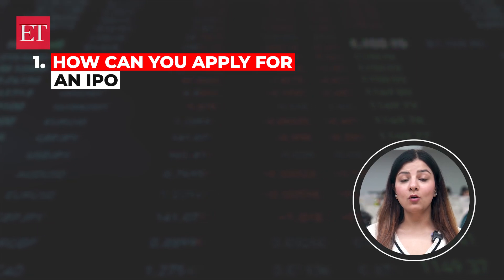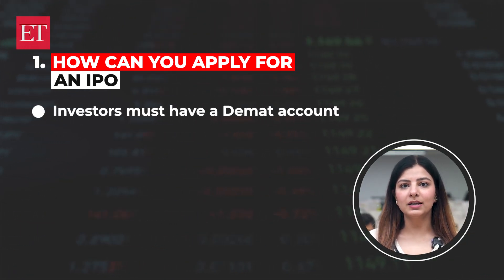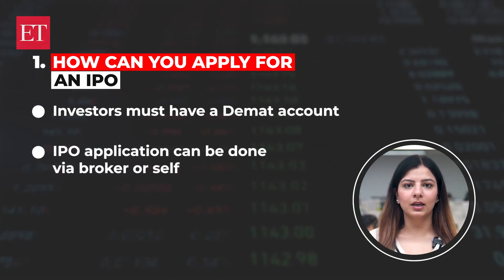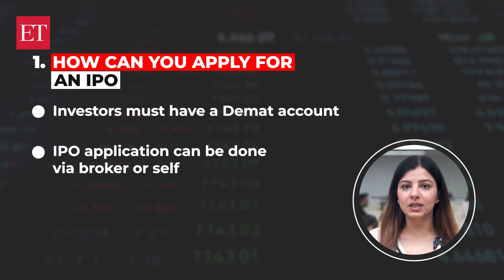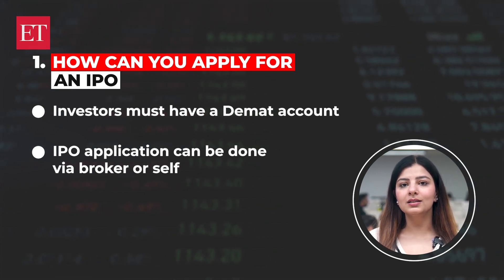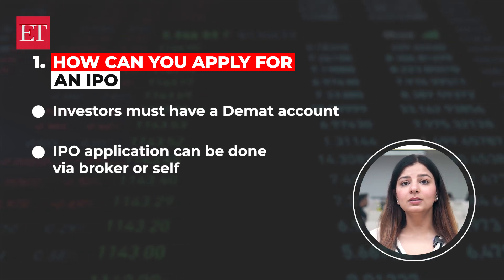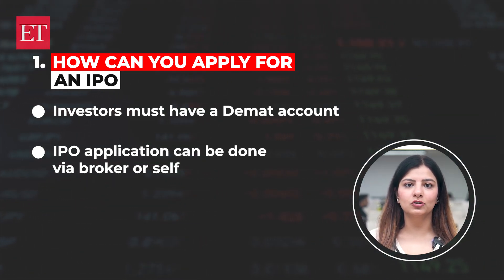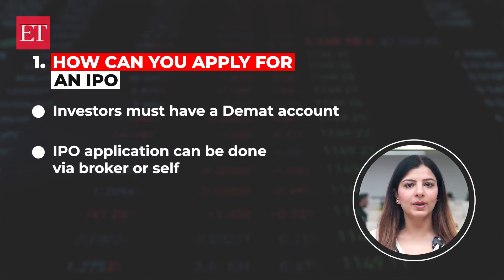Question 1: How can you apply for an IPO? To apply for an IPO, you need to have a DMAT account with a depository participant. There are two ways in which you can apply for an IPO. You can either do it through the broker's website or ask the broker to bid for the required shares on your behalf. Once this bid is placed, you can authorize this transaction through UPI using Bheem, GPay, PhonePay, etc.